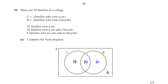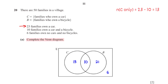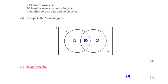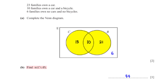There are 50 families in a village. C is the set of families who own a car. B is the set of families who own a bicycle. Complete the Venn diagram. 6 families own no cars and no bicycles, so we put 6 outside sets C and B. 10 families own a car and a bicycle, so we put 10 in the intersection of C and B. 23 families own a car, so subtracting 10 from 23 gives 13, representing families who own a car only. To get the number of families who own a bicycle only, we subtract 13 plus 10 plus 6 from the total of 50, giving us 21. The number of families in C union B is 13 plus 10 plus 21, which is 44.